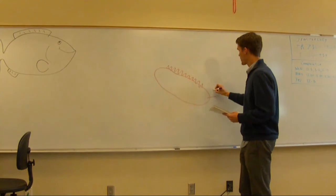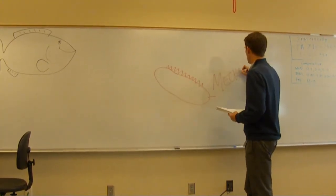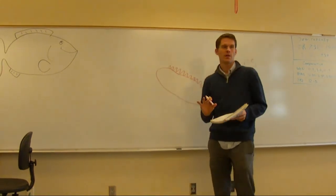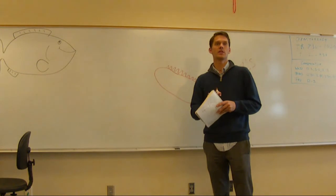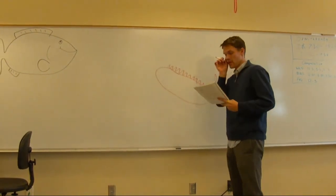This is called the Meckel's cartilage. All of the shark, they don't have bone, their whole skeleton is made out of cartilage, so all of these are going to end in cartilage.